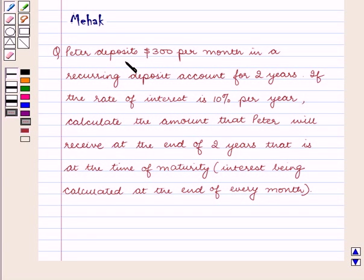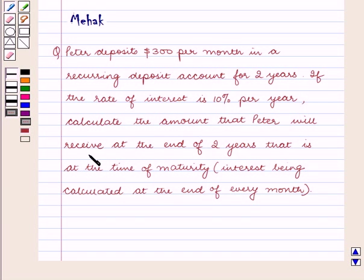The question says that Peter deposits $300 per month in a recurring deposit account for 2 years. If the rate of interest is 10% per year, calculate the amount that Peter will receive at the end of 2 years, that is at the time of maturity, where interest is being calculated at the end of every month.